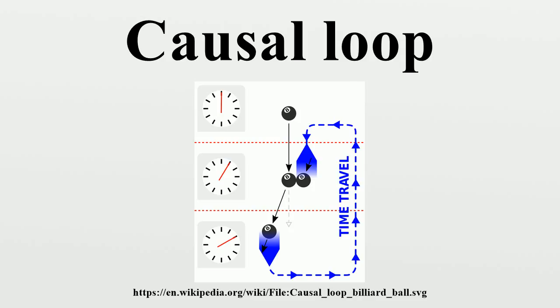Everett gives the movie Somewhere in Time as an example involving an object with no origin. An old woman gives a watch to a playwright who later travels back in time and meets the same woman when she was young, and gives her the same watch that she will later give to him.